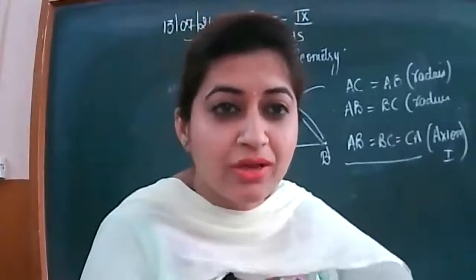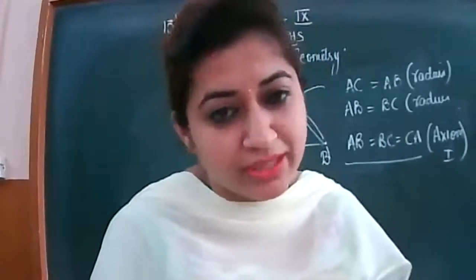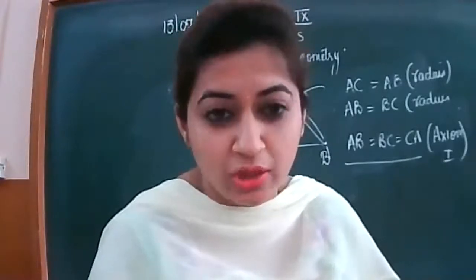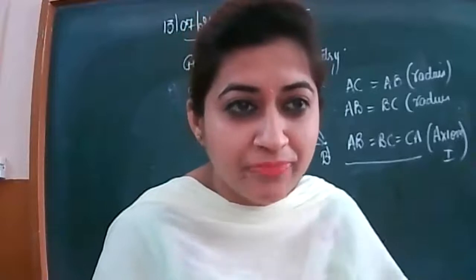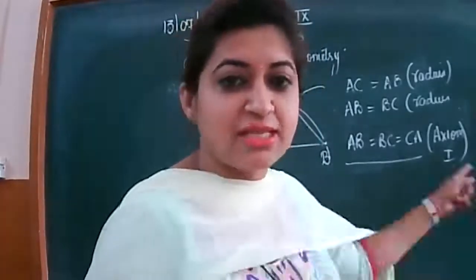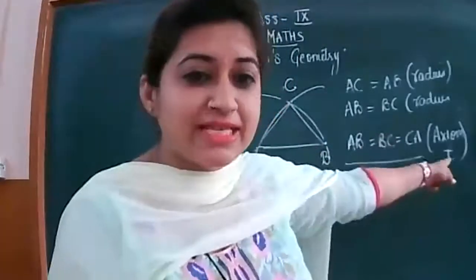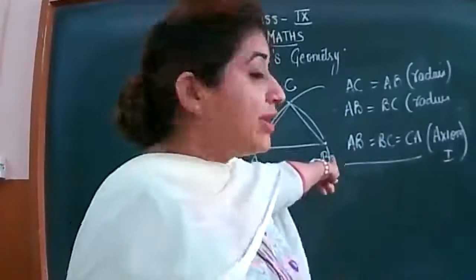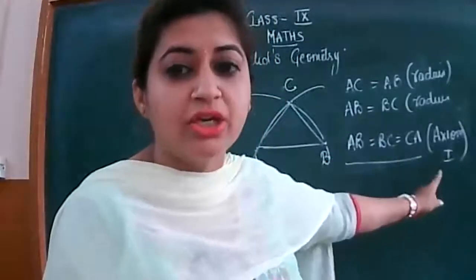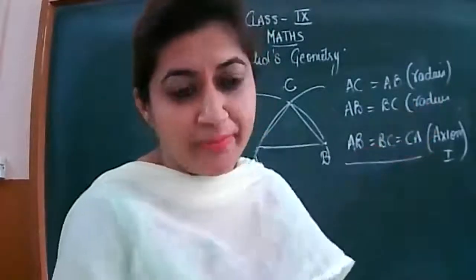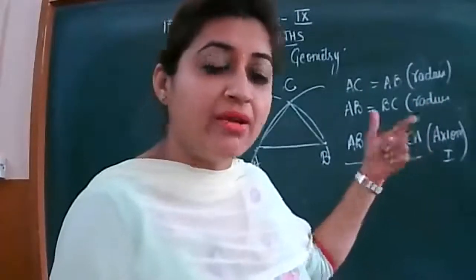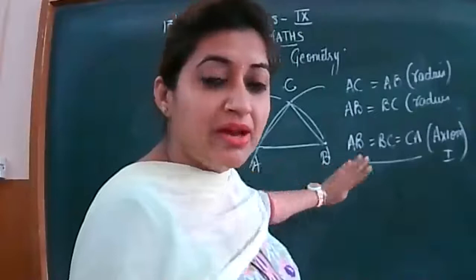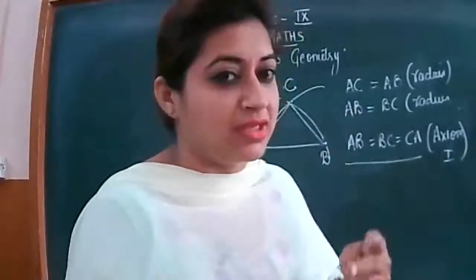You have to learn 7 axioms and 5 postulates. This question will come for 3 or 4 marks - write any two axioms other than the one used here. Since you used the first axiom, leave it and write two other axioms. This is a question of two marks.